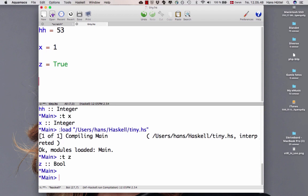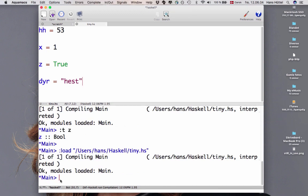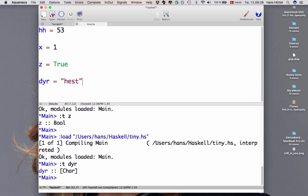We have strings as well. We could have this one. A variable called dyr which means animal in Danish. Let's load that. Let's see what's the type of dyr. It's list of char. In a little while we'll see list types as well. List of char means we have a character type as well. And list of characters is also known as a string. Strings are just lists of characters.